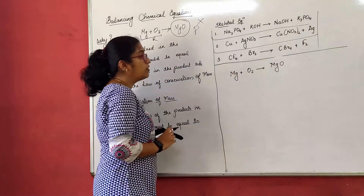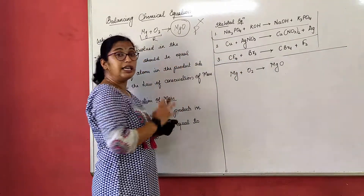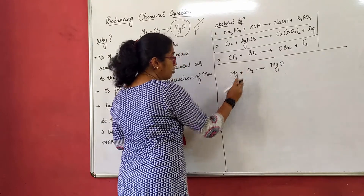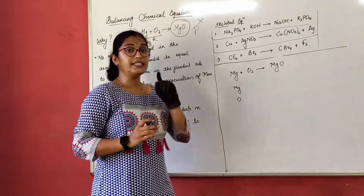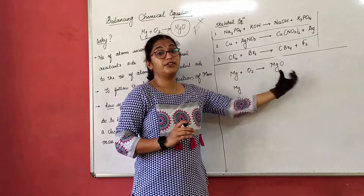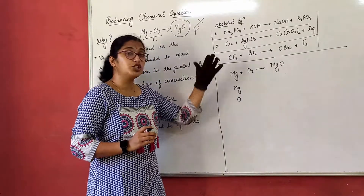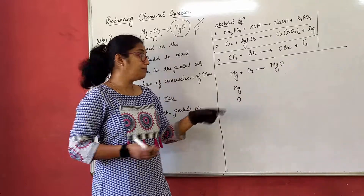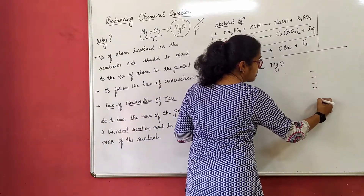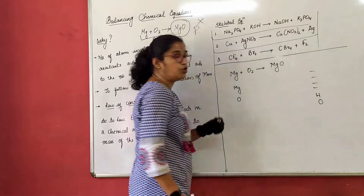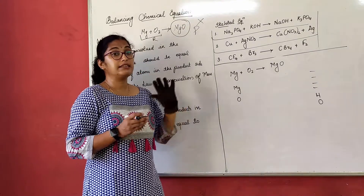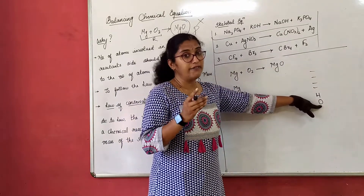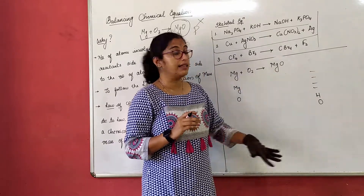Whenever you have an equation, first identify all the elements. While writing down the elements of the given reaction, oxygen should always be written at the end. Here we have only two elements. Always remember: oxygen is always written last, and second last is hydrogen. Any number of elements you have — nitrogen, phosphorus, anything — oxygen always comes last and hydrogen before oxygen, that is second last.